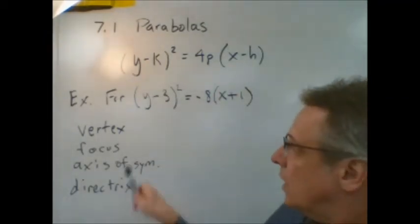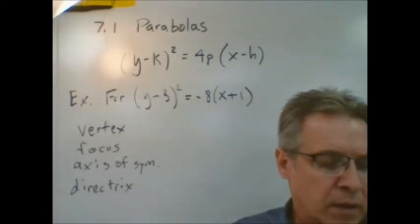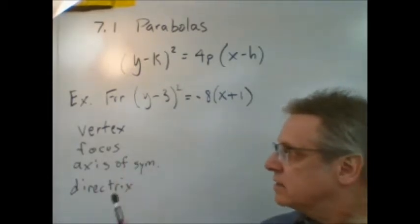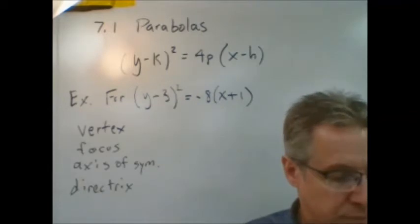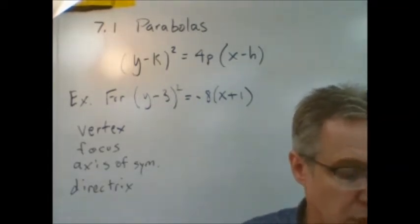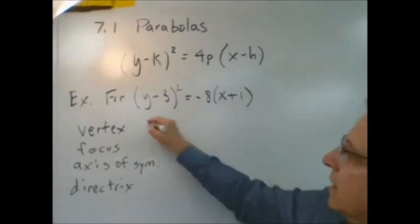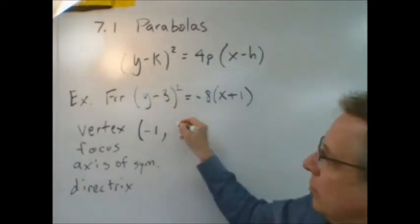And so we're going to use the equation sheet as a guide for identifying all of these parts of the parabola. That's all we're going to do today. For the vertex, if you look at your equation sheet, it says h, k. And so h would be negative 1 and k would be 3.